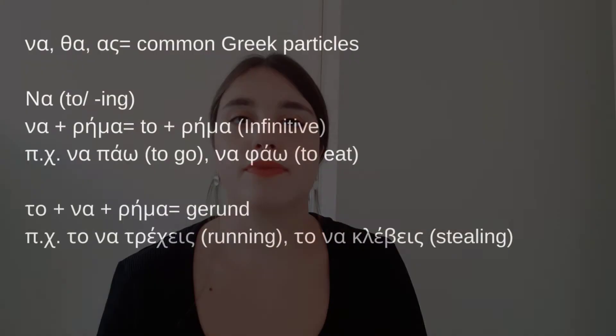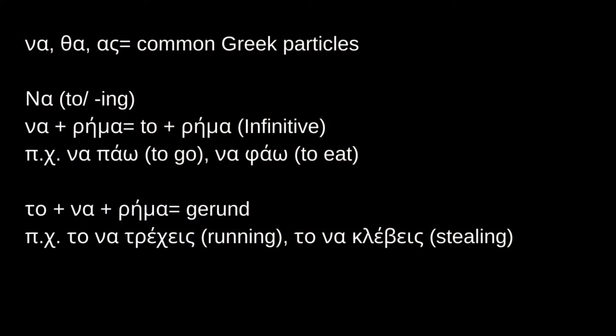Okay, let's sum things up — please take a pen and paper and keep some notes. ΝΑ, ΘΑ, and ΑΣ are common Greek particles. ΝΑ is used to create the infinitive form of a verb or the gerund: Να πάω — to go; Να φάω — to eat; Να τρέχεις — running; Να κλέβεις — stealing. You can always check the description to understand better how to create the infinitive form and the gerund.